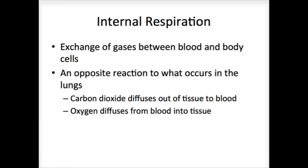Internal respiration is what's actually occurring at the cells. We have the opposite reaction of what's in the lungs — the CO2 diffuses out and the oxygen diffuses in. Again, this can only occur due to a difference in concentration; in other words, you have to have a gradient. Gradients are always how diffusion causes a mass movement in one direction or another.